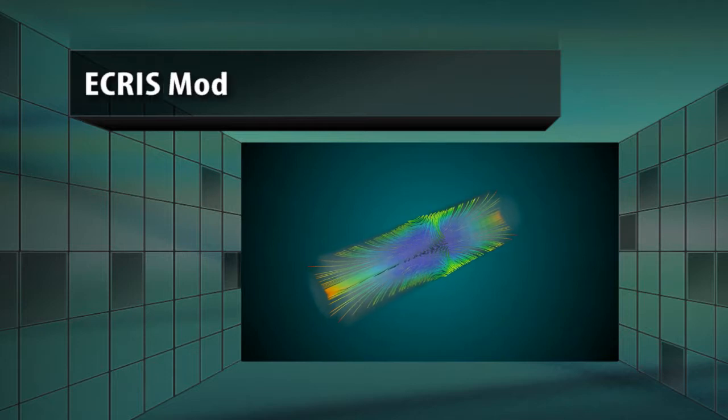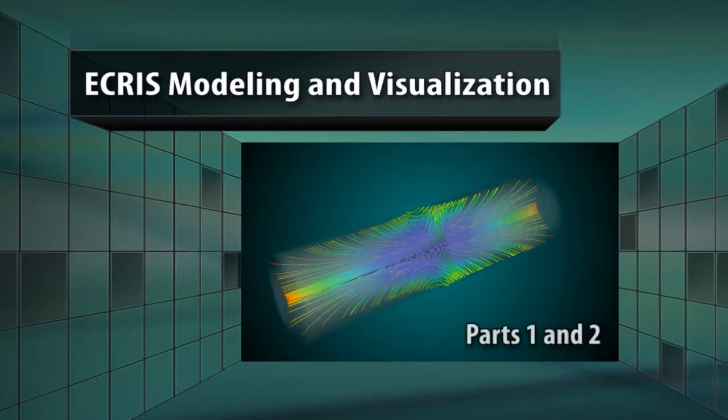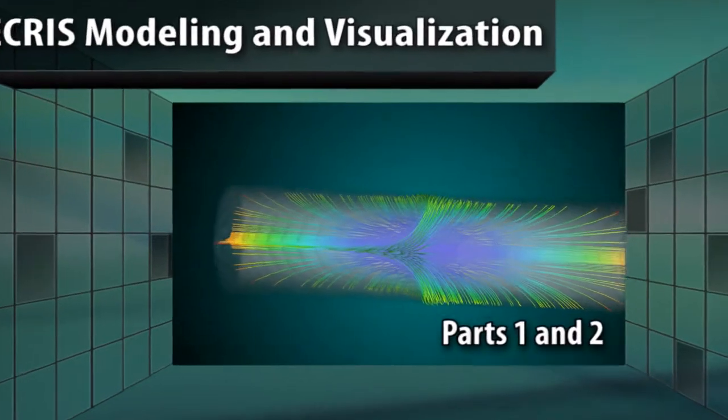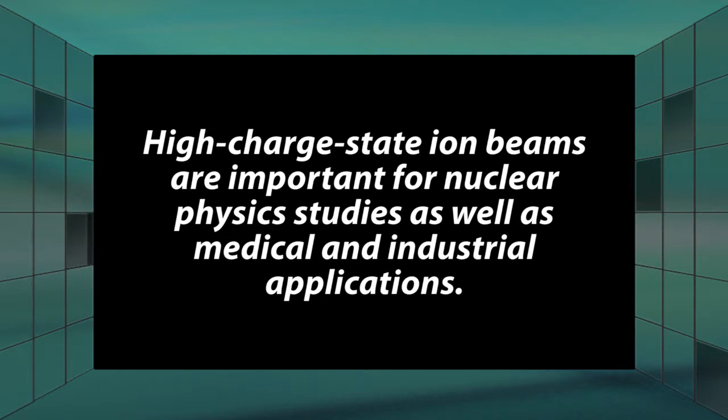In this video we will be visualizing the magnetic field and electron motion inside an electron cyclotron resonance ion source, or ECRIS. An ECRIS is used to produce beams of highly charged ions.